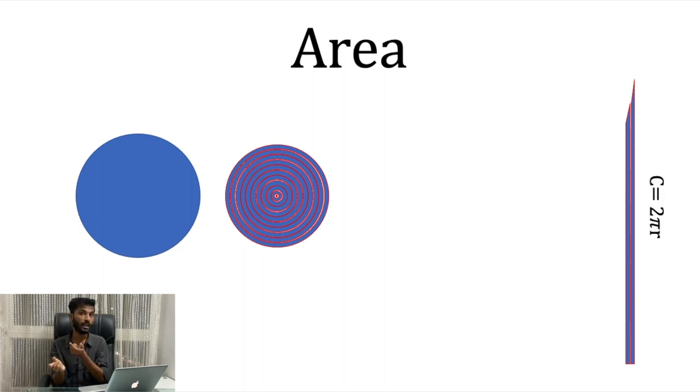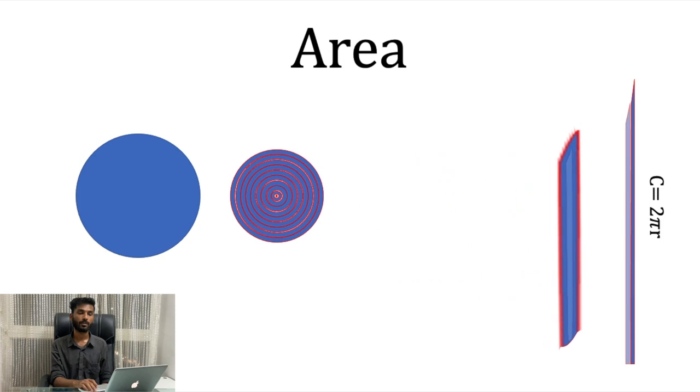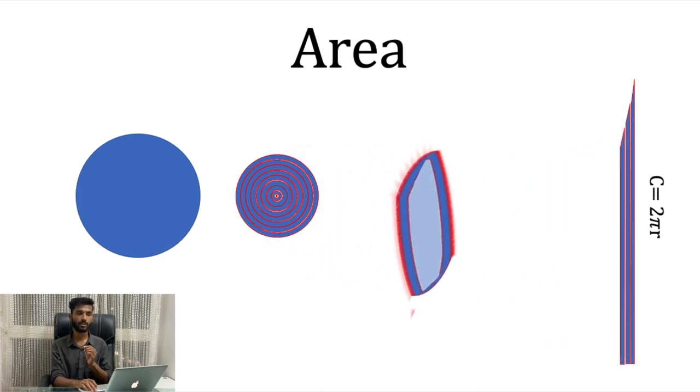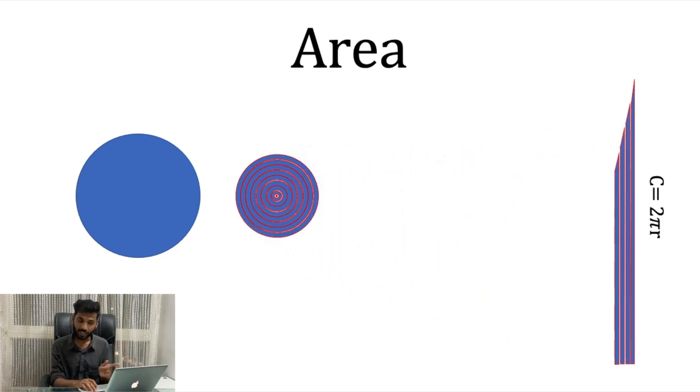It is simple because the length of the outer circle will be more than the length of the inner circle. That is the reason there is a difference in the line. We do same for the inner circle and then for the inner circle and for the inner circle and so on.